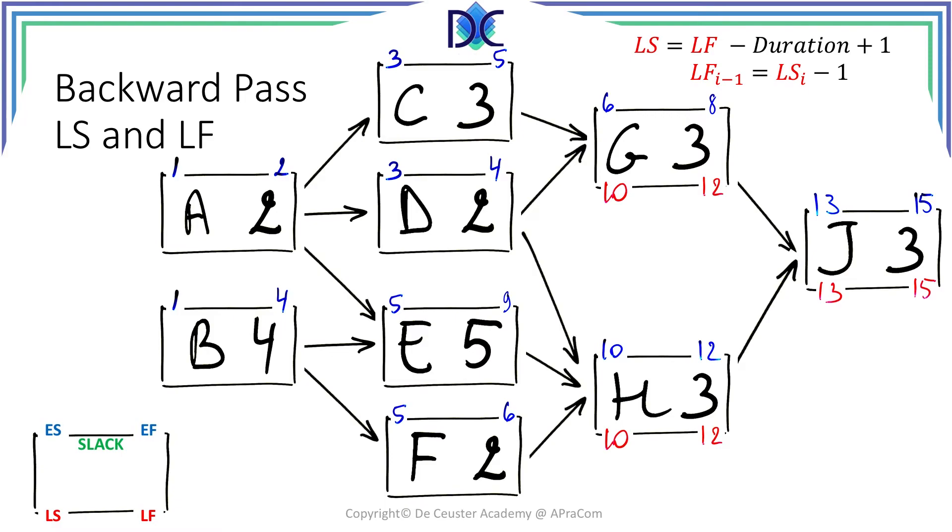Now let's have a look at the predecessors of activity G. We have C and D but D has also the predecessor H. So first C. C cannot finish later than April the 9th. We have 10 minus 1 is 9. That's the second formula. If activity C would start later than April the 9th, activity G cannot start on the 10th and so on. The project will be late.